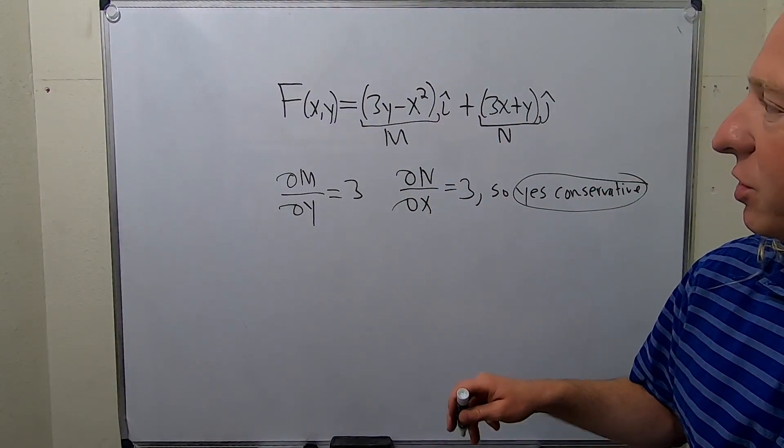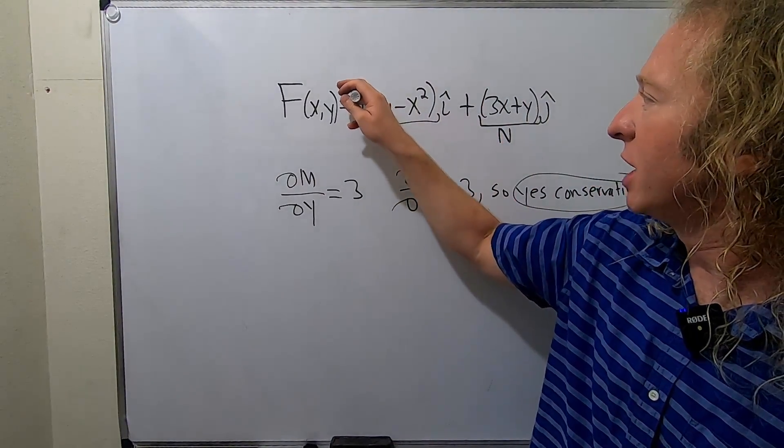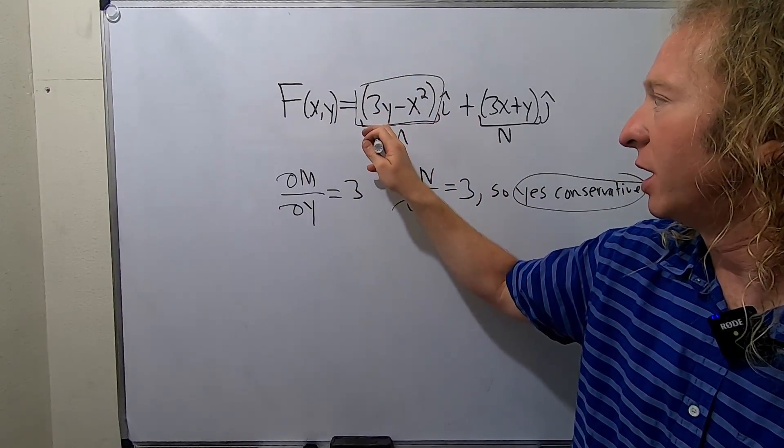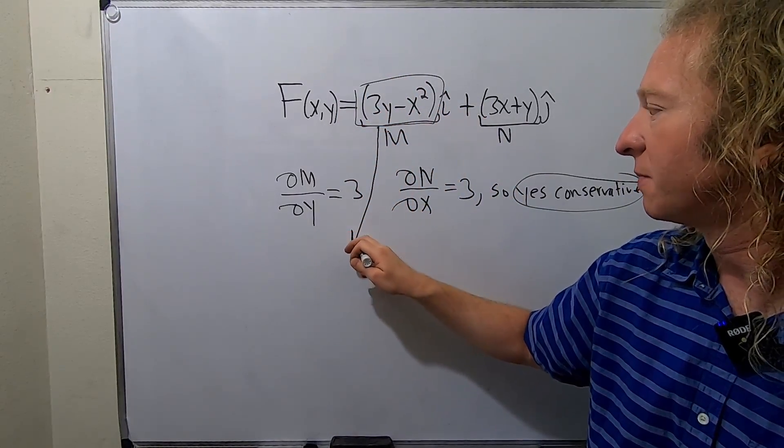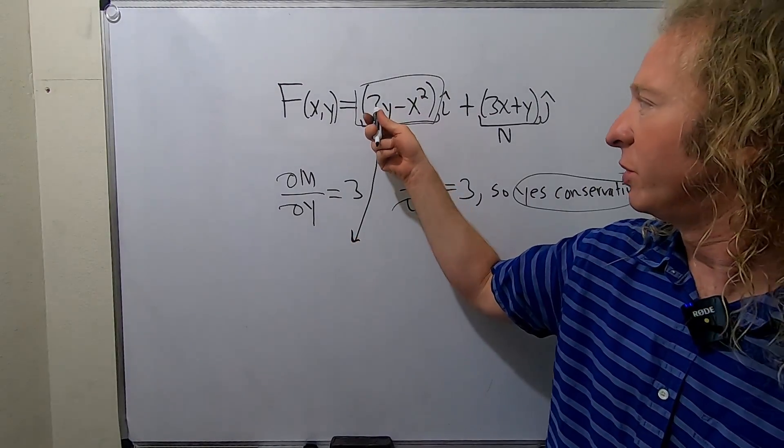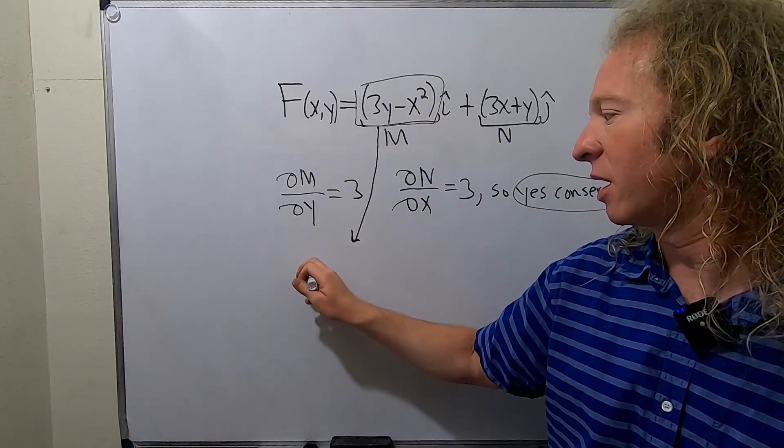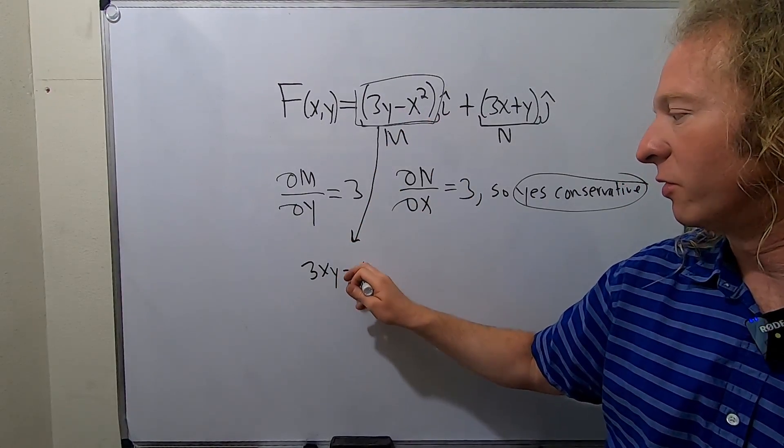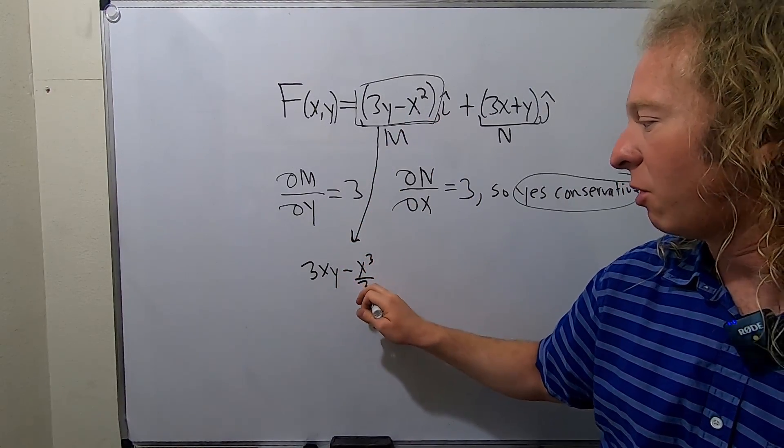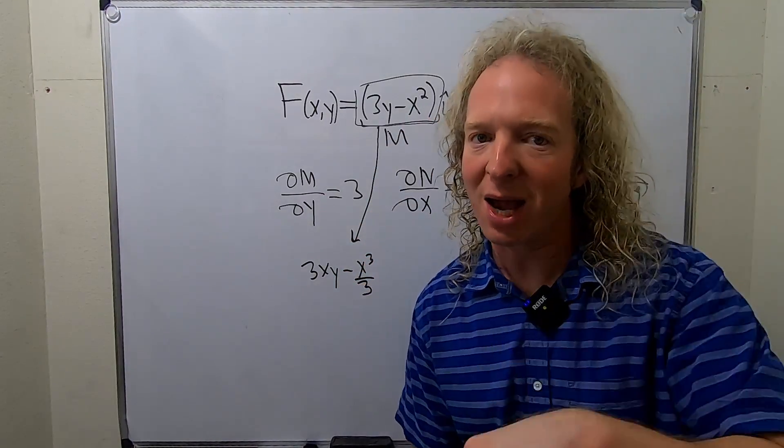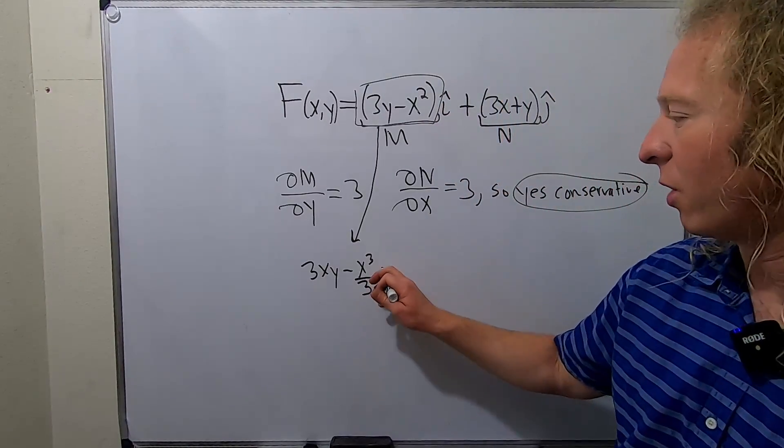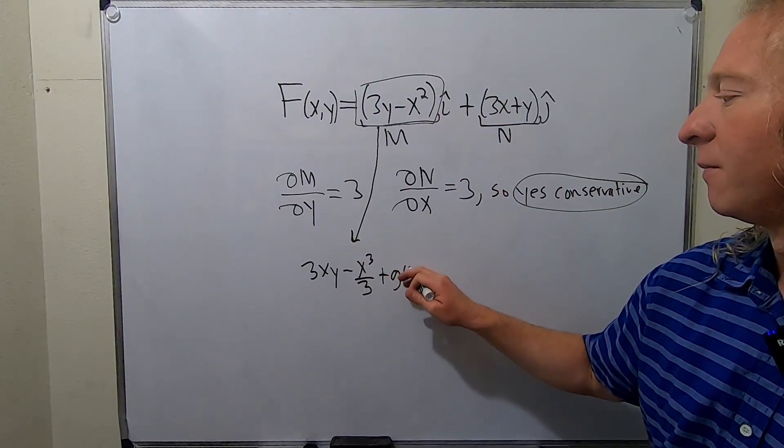To find the potential function, what you do is take this and integrate it with respect to X. When we do that we get 3XY because 3Y is a constant. Integrate this one we get X³/3. And recall that when you integrate with respect to X you add an unknown function of the other variable, so we're going to add a function of Y.